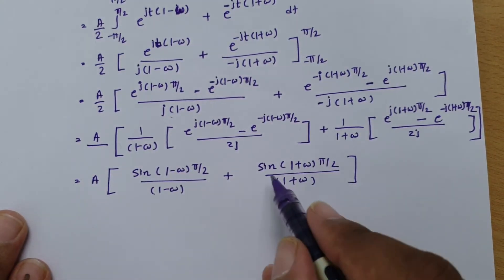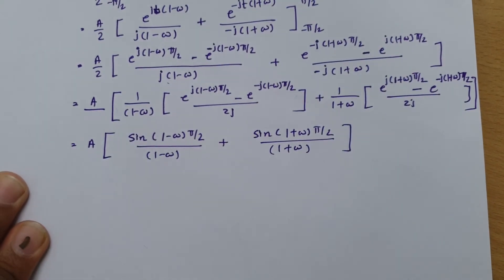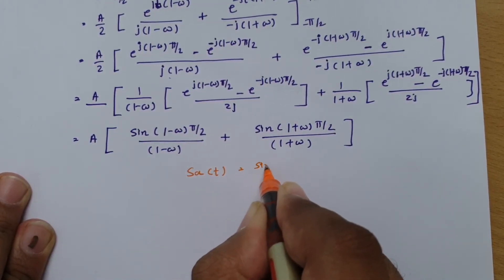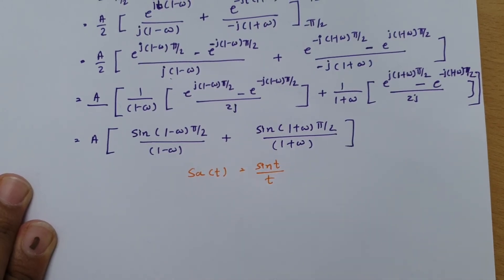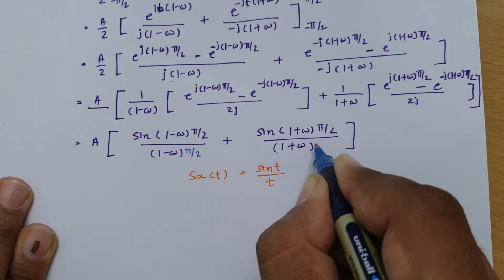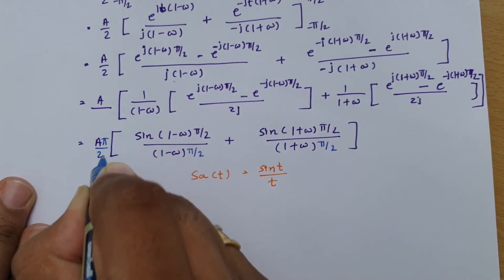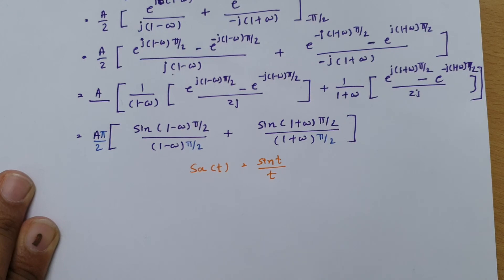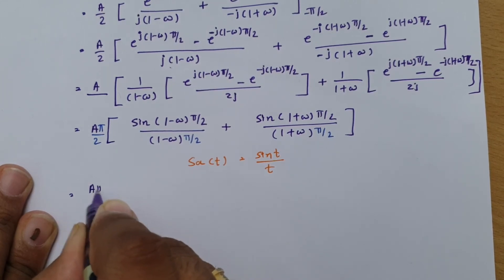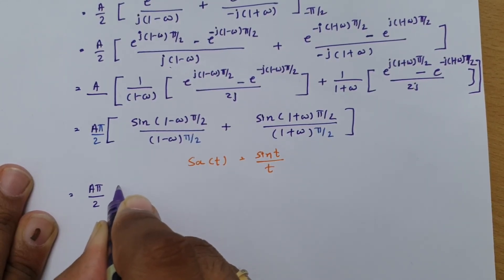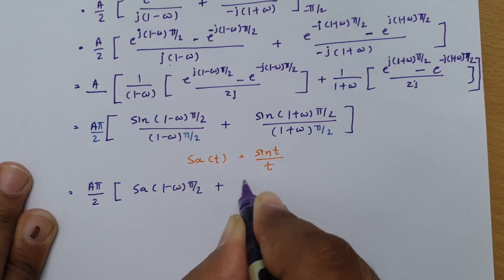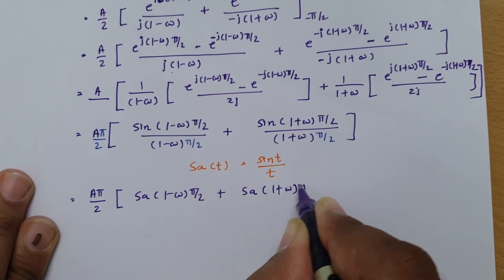We can now write this in terms of the sampling function. As we know, the sampling function is sin(t)/t. So multiplying and dividing by π/2 for both terms, we get X(ω) = A·(π/2) times [Sa((1−ω)π/2) + Sa((1+ω)π/2)], where Sa denotes the sampling function.